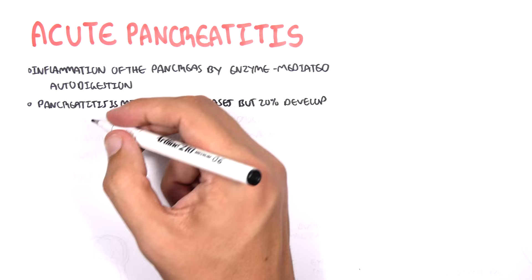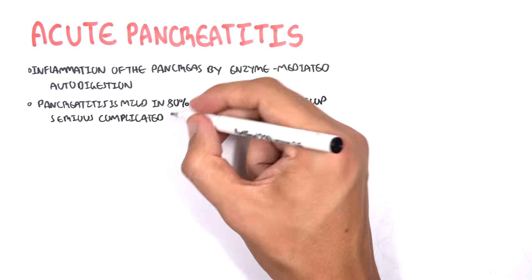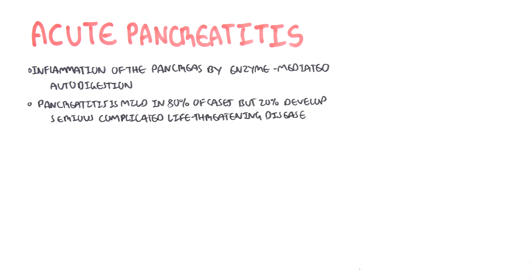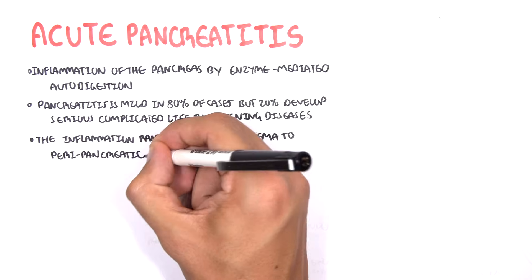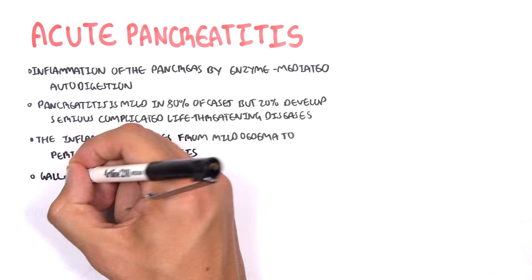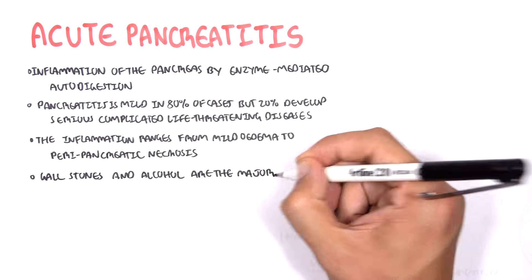Pancreatitis is mild in 80% of cases but 20% develops serious complicated life-threatening disease. The inflammation ranges from mild edema to peripancreatic necrosis. Gallstones and ethanol are the major causes of acute pancreatitis.